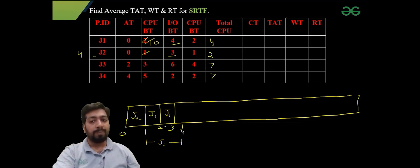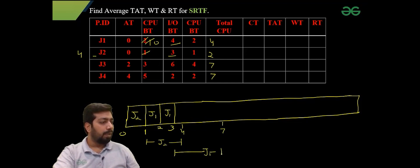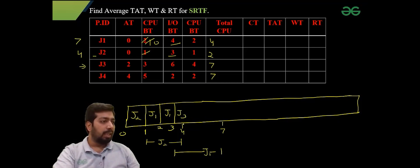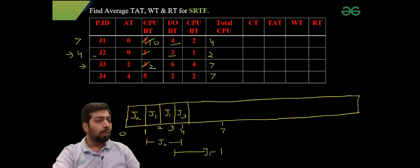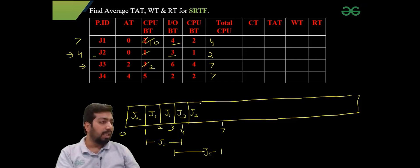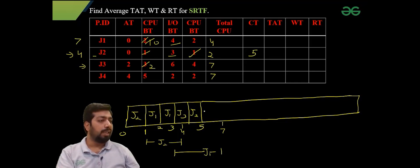J1 completes its first CPU burst at time 3 and goes to the blocked state from 3 to 7. At time 3 only J3 is available, so J3 gets the CPU from 3 to 4. At time 4, J2 returns from the blocked state with a remaining CPU burst of 1, while J3's remaining time is 2. Since 1 is less than 2, J2 preempts J3 and gets the CPU. J2 completes its CPU burst at time 5.